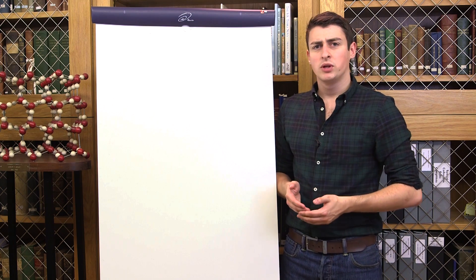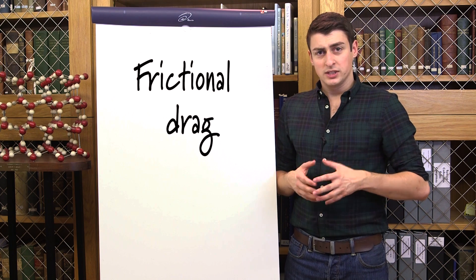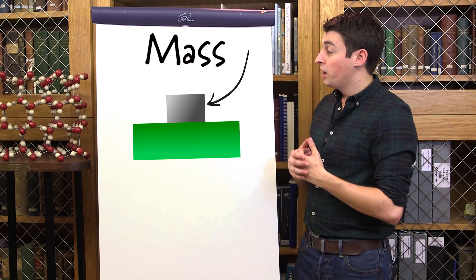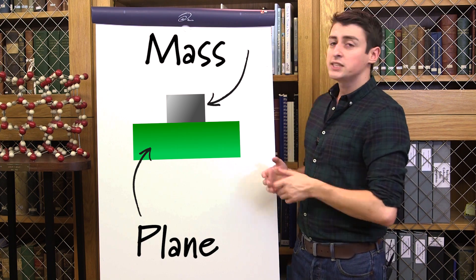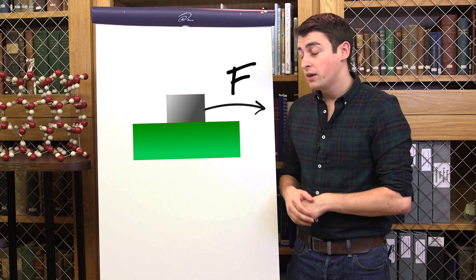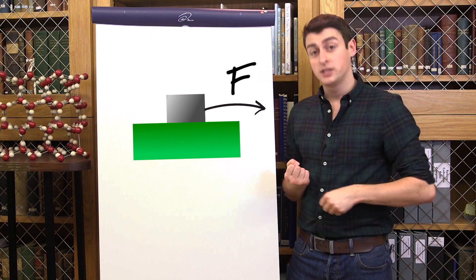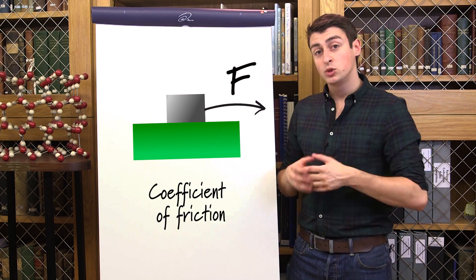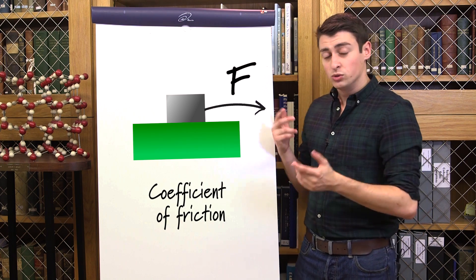Wind pushes sea ice around by a process called frictional drag. In order to understand this, we're first going to look at an idealized model. What we have here is a mass on a plane, just a flat surface. Let's say we want to move this mass around, so we would loop a rope around it and give it a tug. What determines how effective the force exerted in that rope is in pushing that mass around is what's called the coefficient of friction between the mass and the plane. The larger the coefficient of friction between two surfaces, the rougher the boundary is, and so the greater the force required to pull or push the object horizontally across the surface.